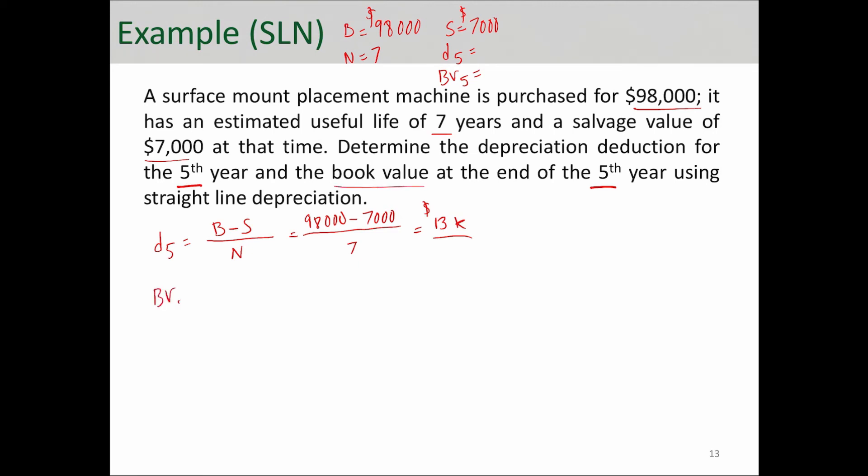Well, book value of year five is equal to cost basis minus T times D sub T. And that is $98,000 minus five times the depreciation deduction for each year, which is $13,000. So if you do the math here, you will see that it is $33,000 book value at the end of year five.